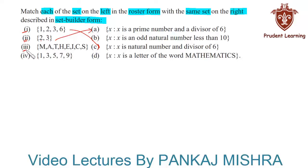A. And now the third set given to us consists of the elements that form the word MATHEMATICS, so this will match with D. And the last set given to us consists of the elements 1, 3, 5, 7, and